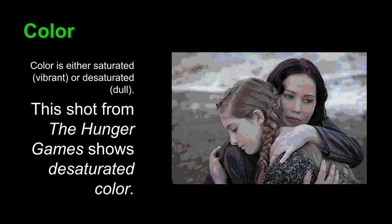The definition of color is fairly obvious, but let's remember a principle based on a couple of concepts. Color in film is either saturated — meaning vibrant and bright — or desaturated, meaning dull and lifeless. Take this shot from The Hunger Games, for instance. The color is desaturated, meaning everything seems a bit washed out and dull, including the setting, clothing, and the characters' very skin. This is desaturated color.